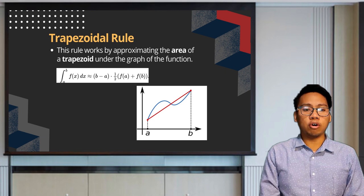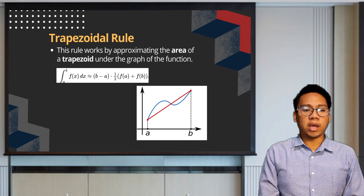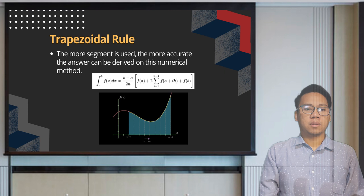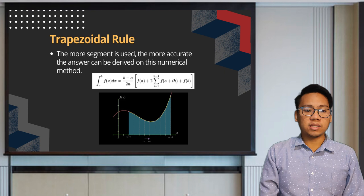As seen on the graph, the area under the function f(x) is computed by approximating the area of a trapezoid, represented by the formula shown in the presentation. The segment on the illustration is 1, with 2 points a and b. If we consider multiple trapezoids under the graph of a function f(x), the computation of the area becomes more accurate, as illustrated on the graph.